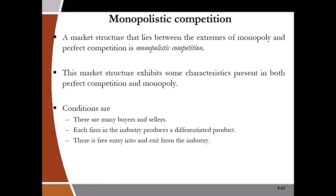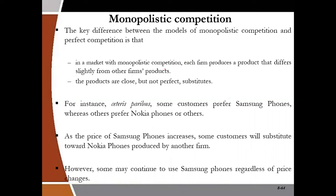What clearly distinguishes monopolistic competition from perfect competition is that firms in monopolistic competition are able to differentiate their products. If firms are not able to differentiate their product, then they would be perfect competitors. The key attribute that monopolistic competition got from monopoly is that they produce a differentiated product.